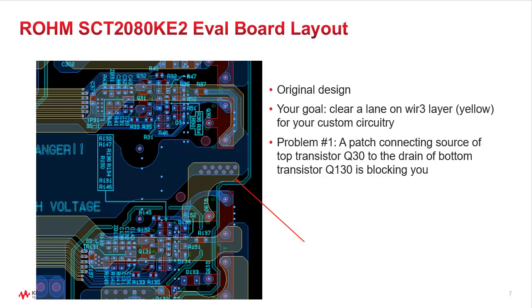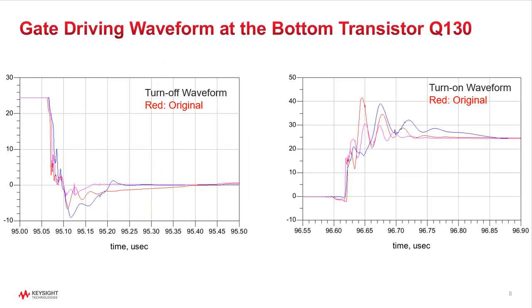By way of illustration, let's say we're concerned about the shape of the turn-off and turn-on waveforms at the bottom transistor Q130. Let's focus on the red trace for now. Looking at this turn-off waveform and the turn-on waveform, we can see it's a pretty good waveform with not much undershoot — this is a working waveform we can live with. We want to keep this red trace as our template that we don't want to degrade.